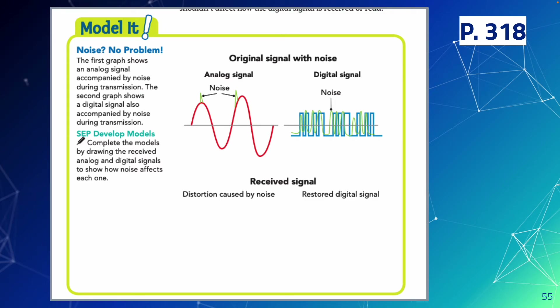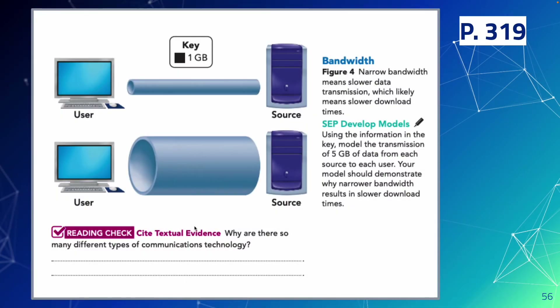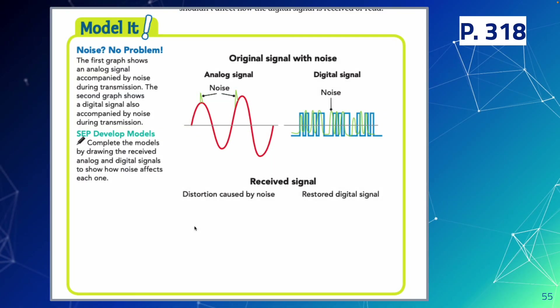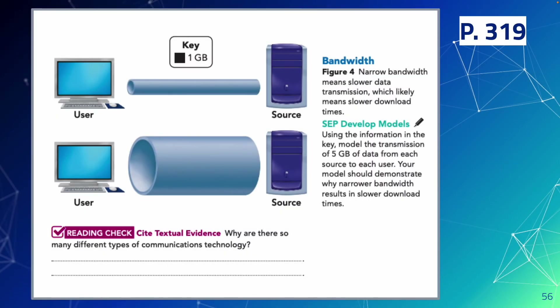The key takeaway is that noise cannot be removed from an analog signal, but it can be removed from a digital signal — that's the restored digital signal. On page 319, figure four illustrates bandwidth: narrow bandwidth means slower data transmission and slower download times.